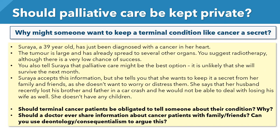Soraya, a 39-year-old, has just been diagnosed with a cancer in her heart. The tumour is large and has already spread to several other organs. You suggest radiotherapy although there is a very low chance of success. You also tell Soraya that palliative care might be the best option — it is unlikely that she will survive the next month. Soraya accepts this information but tells you that she wants to keep it a secret from her family and friends as she doesn't want to worry or distress them. She says that her husband recently lost his brother and father in a car crash and would not be able to deal with losing his wife as well. She doesn't have any children.